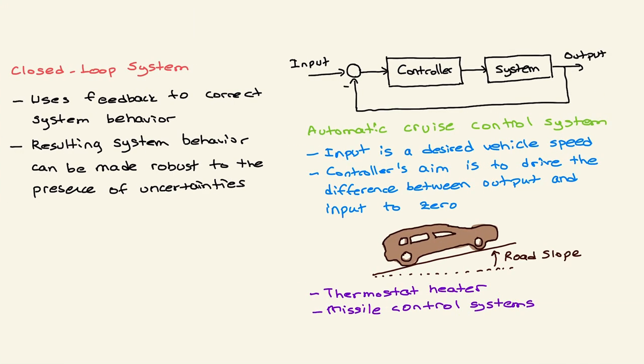On the other hand, in a closed-loop system we use feedback. A closed-loop system is also called as a feedback control system, and this feedback in the closed-loop corrects system behavior.